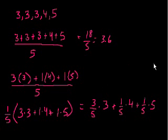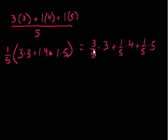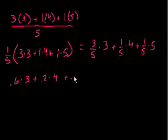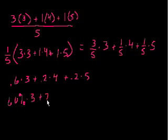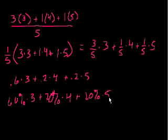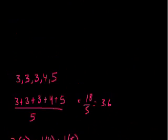Expressing those as decimals: 0.6 times 3, plus 0.2 times 4, plus 0.2 times 5. Or as percentages: 60% times 3, plus 20% times 4, plus 20% times 5. This is identical to adding up the numbers and dividing by the total count.